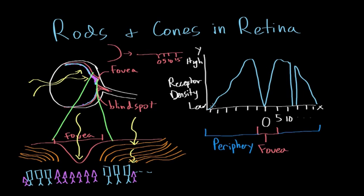Cones have a different distribution. There aren't very many cones in the periphery, but when you get to the fovea, there's a huge spike in the number of cones. As you move away from the fovea again, the cones drop back down. At the blind spot, there are no photoreceptors, and on the other side of the blind spot, there's a very low number of cones.